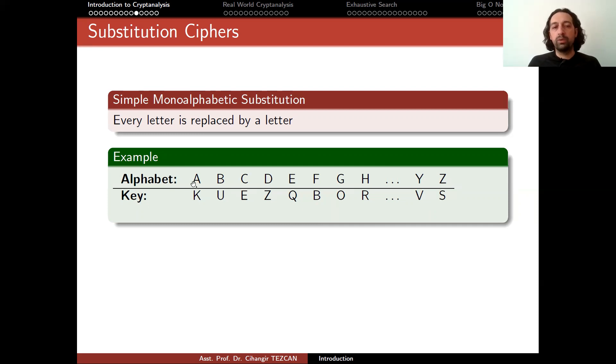whenever you see A, you will write K instead. So whenever you see B, you will write U instead. So it will look like random letters as a ciphertext. And when the person you want to communicate with obtains the ciphertext, they will also replace every K with A, every U with B and so on to obtain back the plaintext.